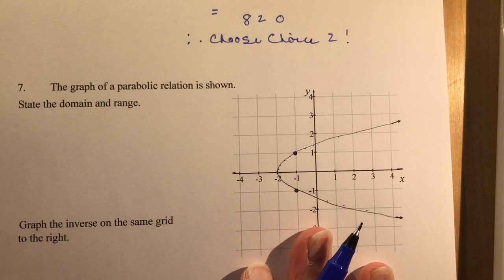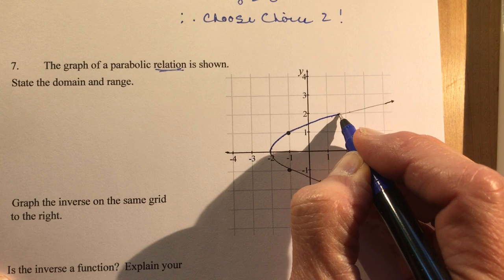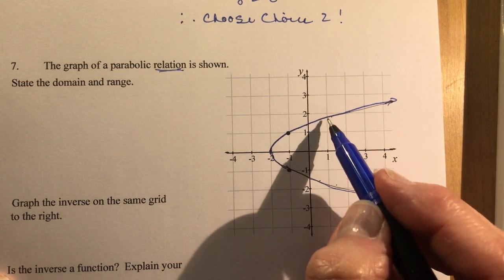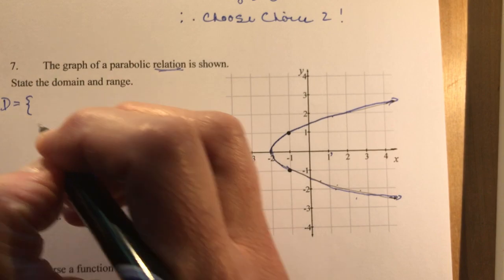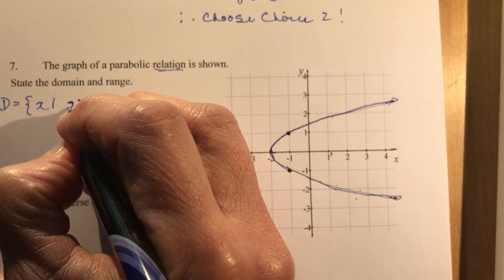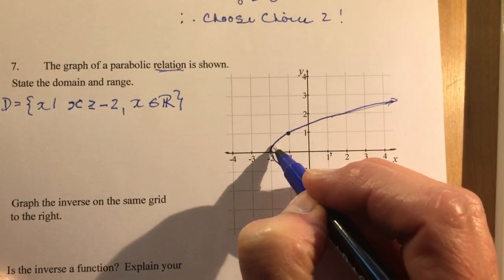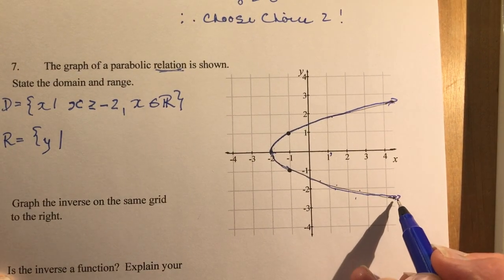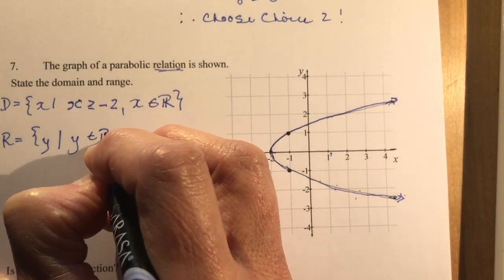Number 7. The graph of a parabolic relation is shown. See they say relation, it's not a function. Why isn't it a function? This isn't a function because for every value of x, you have more than one value for y all along here. State the domain and range. What's the domain? X starts here and goes this way. So x is greater than or equal to minus 2. X is an element of real numbers. And what is the range? We're going to say y. Y goes everywhere. Look, it's going up, it's going down, it's everywhere. Y is an element of real numbers. Period.